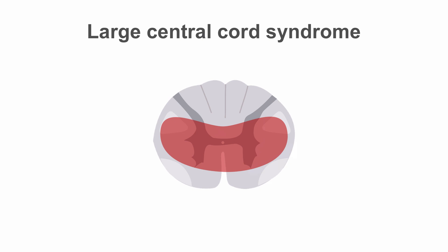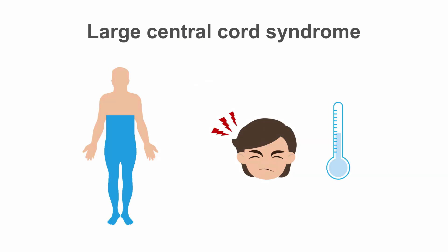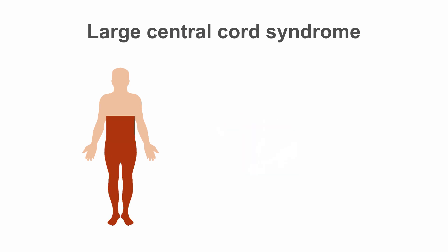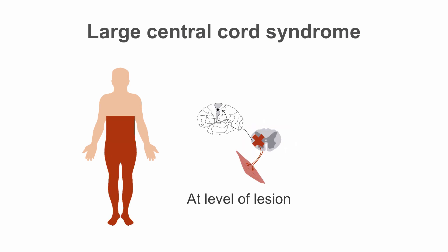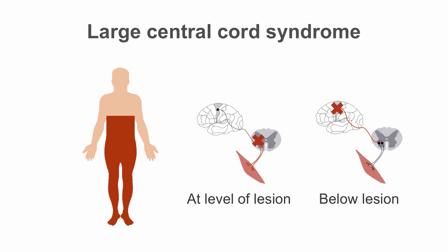In large central cord lesions, there is loss of pain and temperature sensibility, but there can also be loss of adjacent tracts and gray matter. At the segment involved, there are lower motor neuron signs due to anterior horn cell damage. Below that level, there is upper motor neuron damage due to damage of the corticospinal tracts.